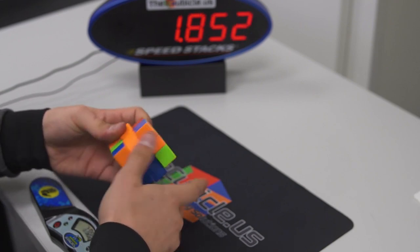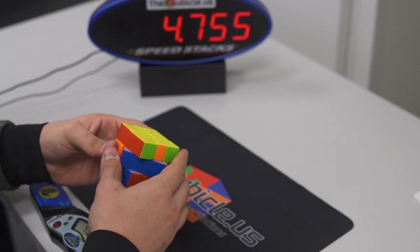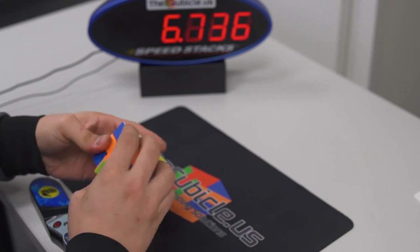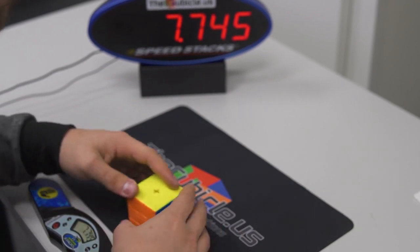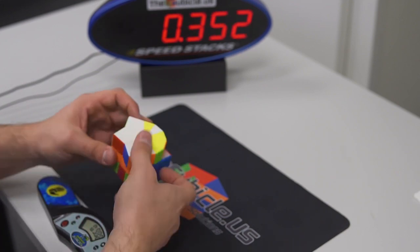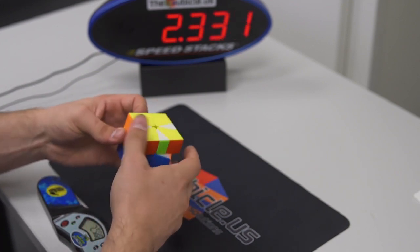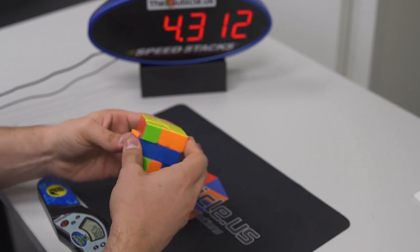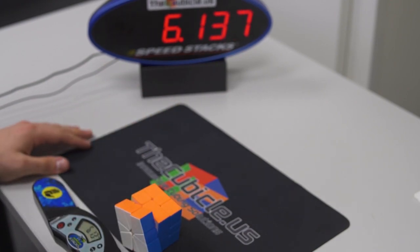This cube also features the same modifications as the Cubicle Volt Square-1, such as the lock nut stabilizer combo and inner glue mod. With a mixture of Traxxas 10K, Lubicle Speedy, and Silk, this puzzle is lubed to perform at a moderately fast speed. With all these features, we believe we have produced the perfect balance of stability, durability, and speed in our Cubicle Volt MS.